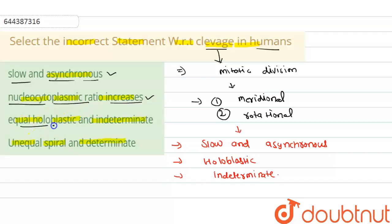And unequal spiral and determinate - that is incorrect because in humans there is holoblastic cleavage, so option 4 is the incorrect statement for cleavage in humans. I hope you understand this solution, thank you.